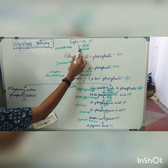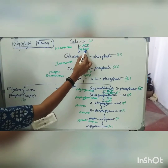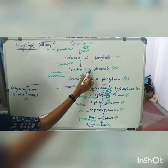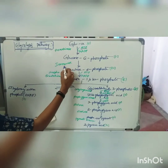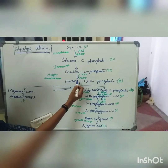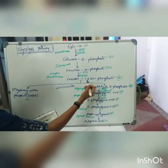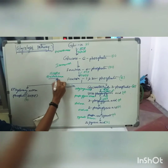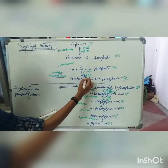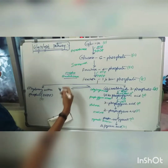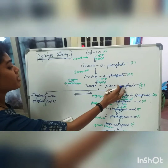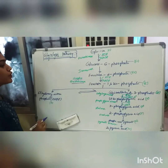ATP is utilized and energy is released in the form of ADP. Then, glucose 6-phosphate is converted into fructose 6-phosphate in the presence of isomerase enzyme. Fructose 6-phosphate is then converted into fructose 1,6-bisphosphate in the presence of fructokinase enzyme. Again, ATP is utilized and energy is released as ADP. Fructose 1,6-bisphosphate is then split into two molecules.